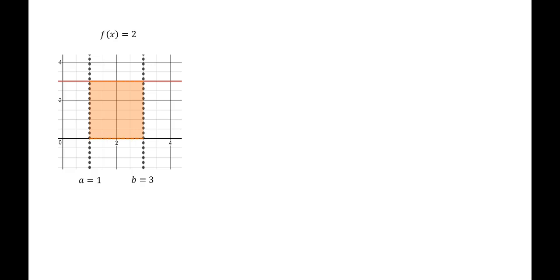Suppose we wanted to find the area under the curve f of x equals 2 — it's just a flat line — on the interval between a equals 1 and b equals 3. This is an easy problem. It's just a rectangle. All you need to do is find the height and the width, which is 3 and 2, and the area is just 6.